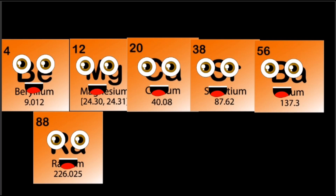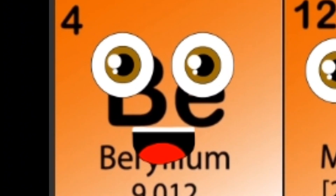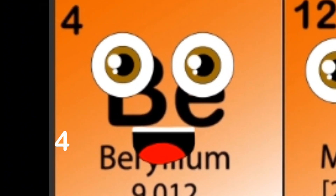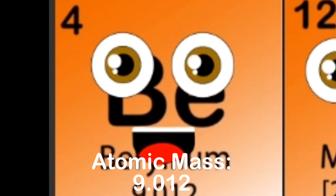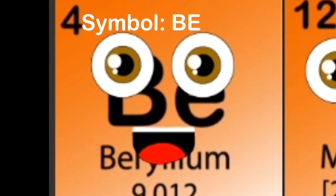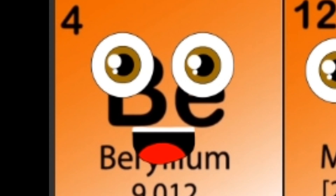My name is Beryllium. My atomic number is four, my atomic mass is nine and change. My symbol is Be, found on the periodic square. I'm using this space shuttle to lift astronauts in the air.